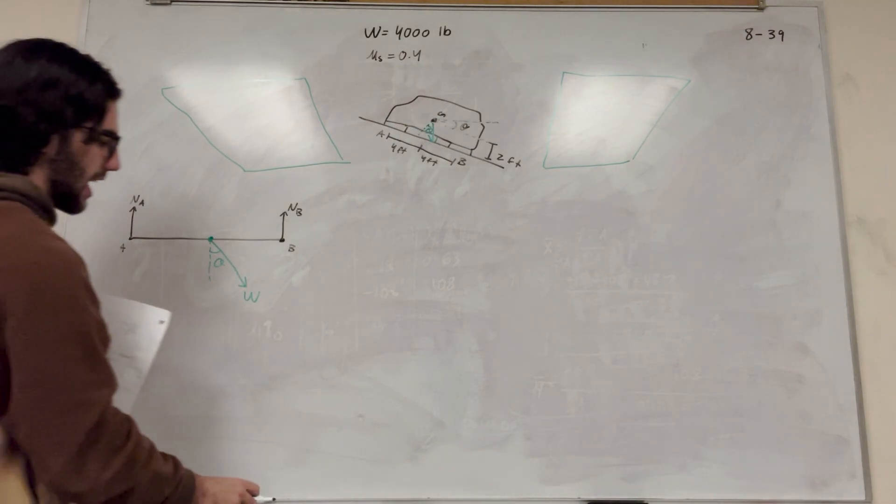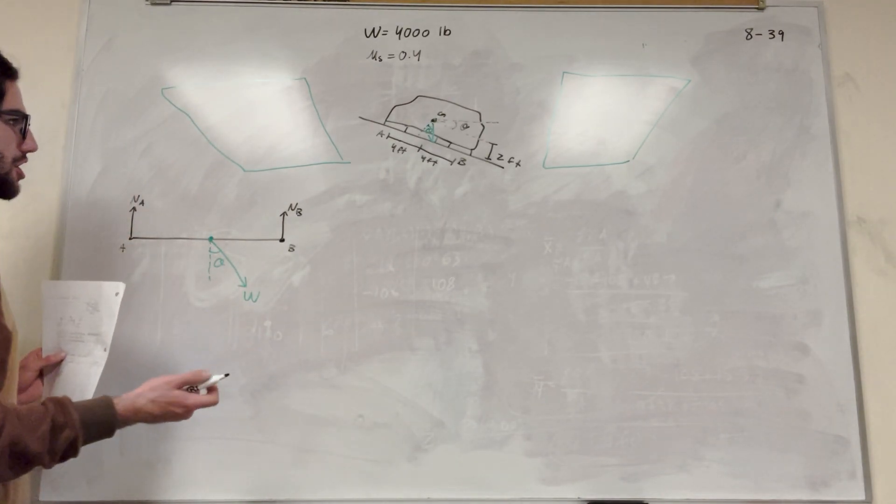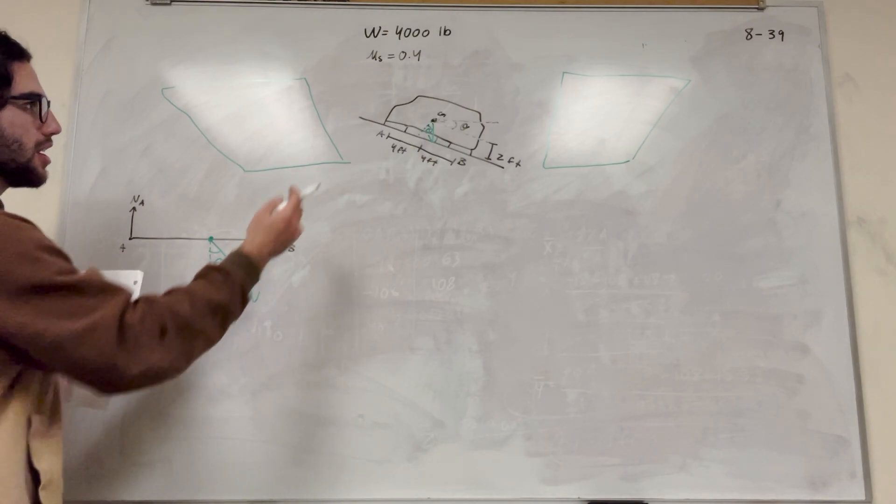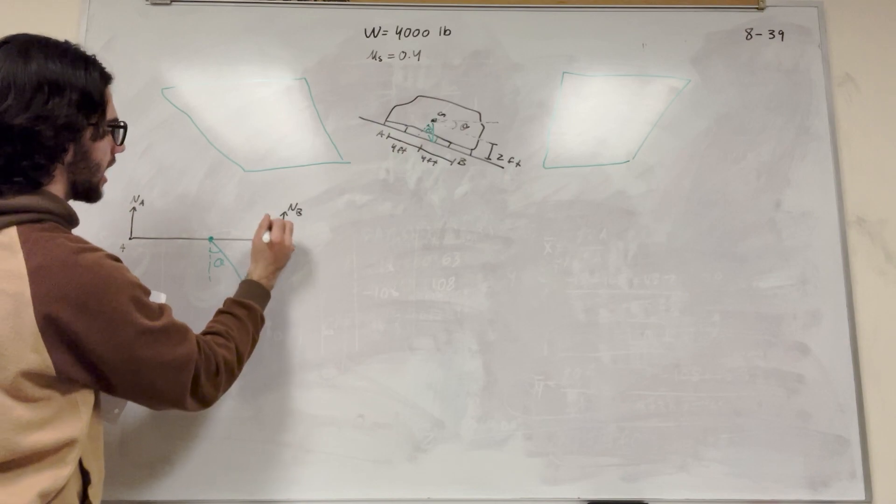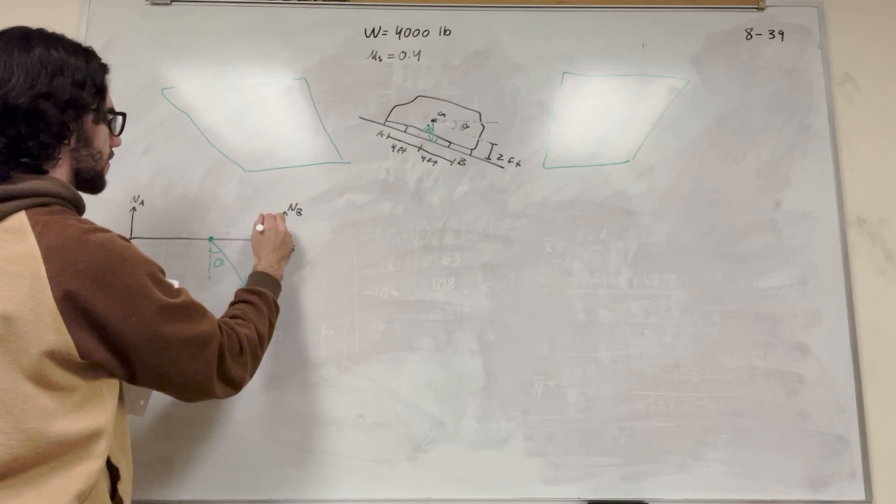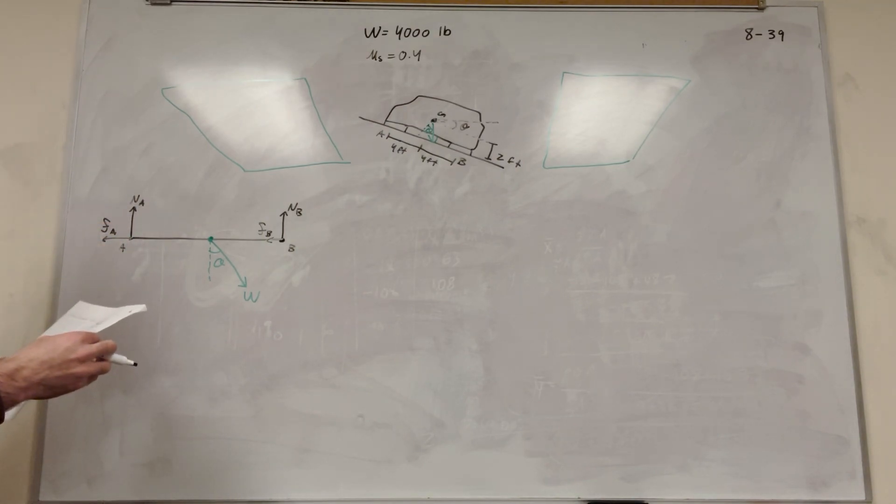And so we're missing two things now. If we do something with forces in X, it's not going to work out. So we have friction. Friction is opposing motion. So the car wants to slip down the hill, so the friction is going to be pushing this way at the normal, at the tires. So we're going to have friction at B, friction at A. Alright, so here's a free body diagram.